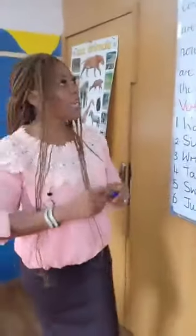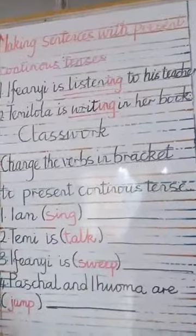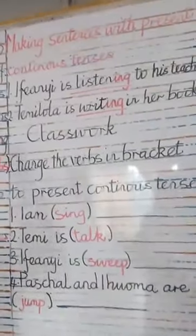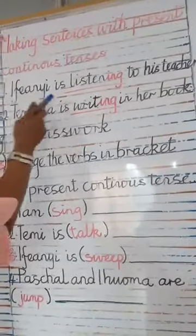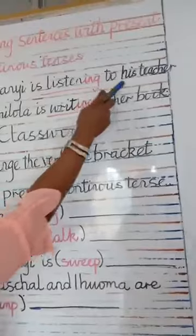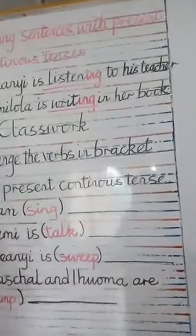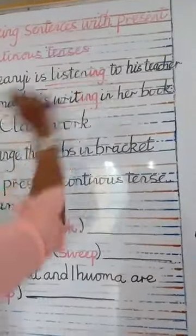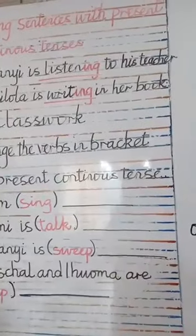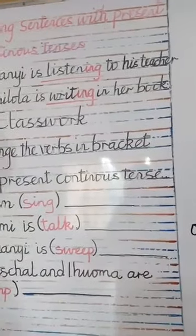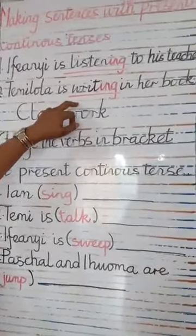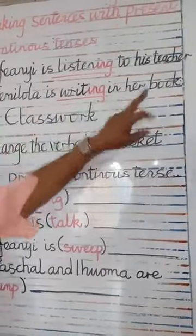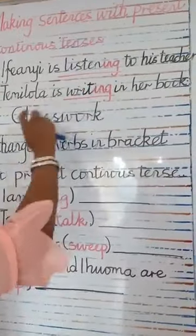Now let's make some sentences with present continuous tense. The first one: Ifi is listening to his teacher — that is a present action. Remember, you add -ing to make it a present action. Two: Semula is writing in her book — -ing is a continuous action.